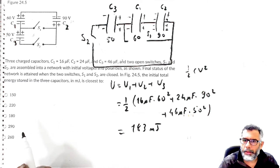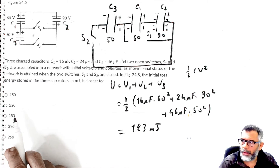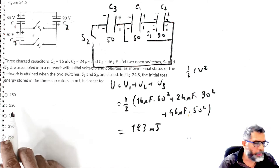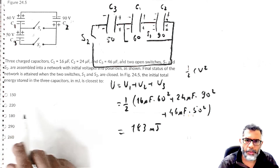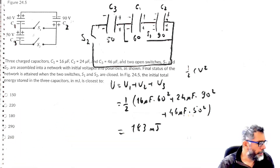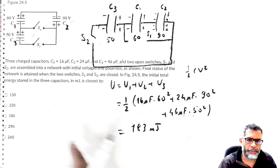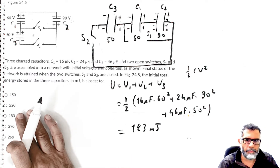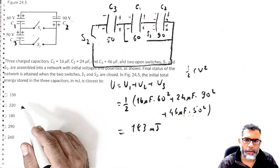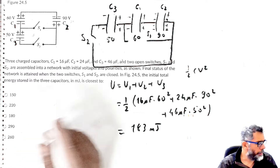The closest answer choice is 180 millijoules, so that is the closest answer. You can check the Canvas answer key, and this may well be confirmed as the correct answer.